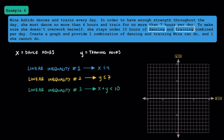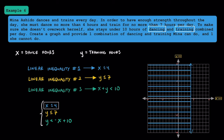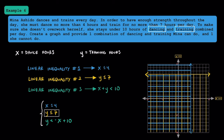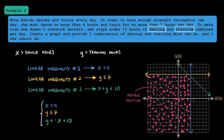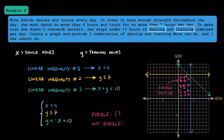Rearranging these linear inequalities into slope-intercept form, we have our three linear inequalities. For the first graph, we have a solid vertical line at x equals 4 and shade to the left because it has to be less than 4. For the second, a solid horizontal line at y equals 7, shading below since y has to be less than or equal to 7. For the third, a dashed line with a negative slope — plugging in (0, 0) gives a solution so we include it in the shading. Cleaning up the graph to show only the region shaded all three times: since Mina can't dance or train for negative hours, we're restricted to quadrant one. One possibility is (3, 5): Mina dances for three hours and trains for five hours. A non-solution would be (8, 2) — not only is it not less than 10 hours total, but she would be dancing for eight hours, which exceeds the four-hour limit.